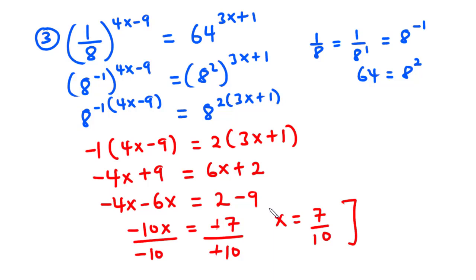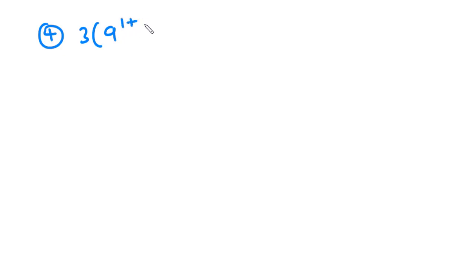Now let's solve the last example. For question 4, we have 3 times 9 exponent 1 plus x equals 27 exponent negative x.